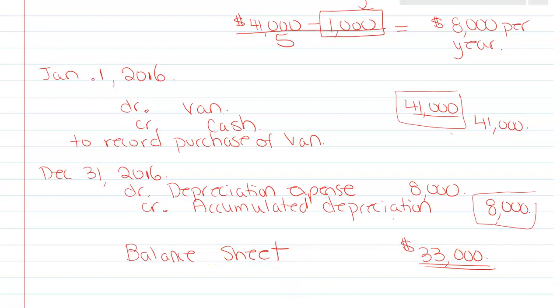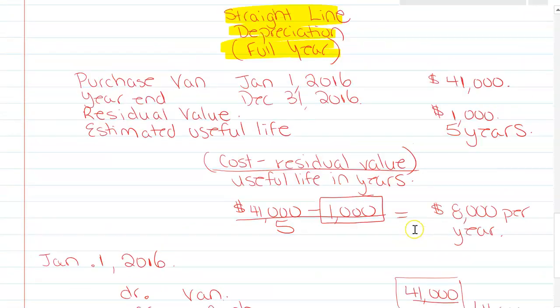I'm going to use the same example of the full year depreciation of the van. Now we're going to look at how the depreciation expense is going to be different when we buy the van in a partial month.